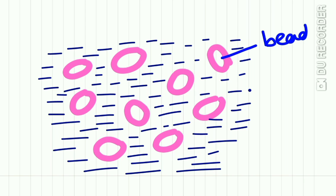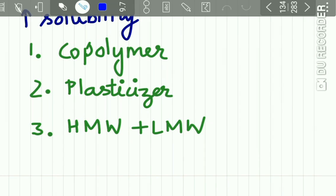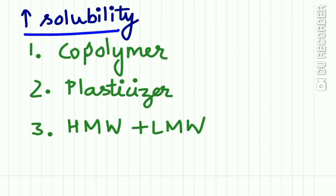The powder particles are small bead-shaped spherical particles, appearing as pink colored beads, which dissolve in the monomer. To increase the solubility of the polymer in the monomer, a co-polymer is added — for example, methyl methacrylate and ethyl ethacrylate mixed together. Adding a plasticizer like dibutyl phthalate also increases solubility, as does blending high and low molecular weight beads of the polymer.